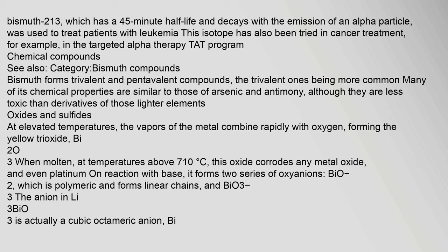Bismuth forms trivalent and pentavalent compounds, the trivalent ones being more common. Many of its chemical properties are similar to those of arsenic and antimony, although they are less toxic than derivatives of those lighter elements. At elevated temperatures, the vapors of the metal combine rapidly with oxygen, forming the yellow trioxide Bi₂O₃. When molten at temperatures above 710°C, further oxidation occurs.